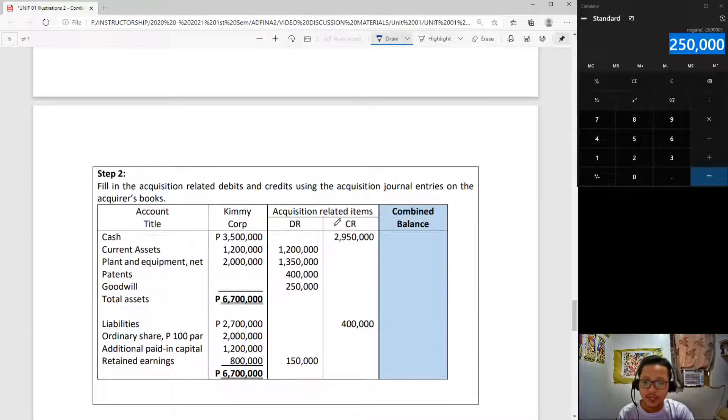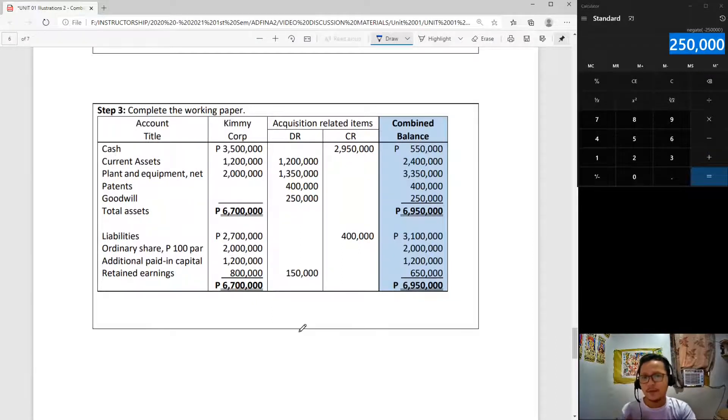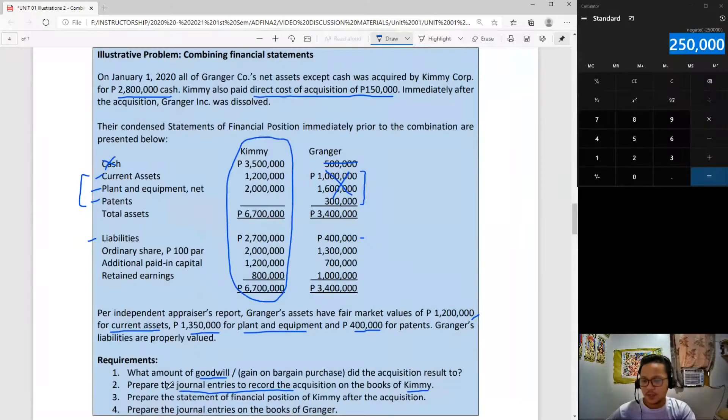The next step is common sense. What we do here is use the beginning balance and then plus the debits for assets minus credits, for liabilities plus credits minus debits. You will get the combined balances. Here is how Kimi's combined balance sheet will look like after the business combination, after affecting all the transactions that transpired. You can pause the video anytime if you want to examine closely the figures.